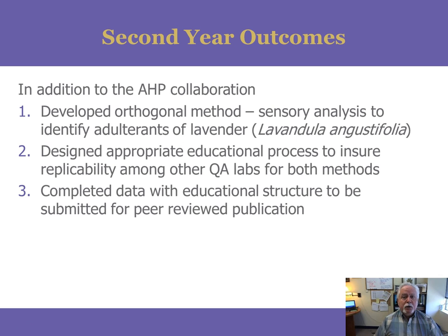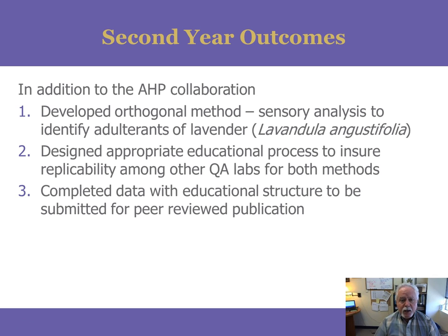So in our second year we had to develop what's called an orthogonal method — sensory analysis — to identify adulterants. Orthogonal methods are methods that aren't exactly like each other; they provide very different data. We looked at the known essential oil constituents that helped define the two different species and began to train our panelists in the QA course to identify them by smelling Lavandula angustifolia as a whole extract, spike as a whole extract, aging lavender so that degradation of some of those compounds would train the nose, and specific essential oils that tend to be more predominant in one species over another. This really helped in terms of being able to effectively use the method, as well as the identification of what bracts look like, their orientation, etc.